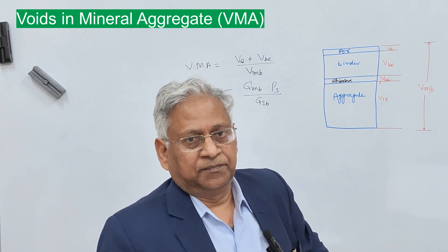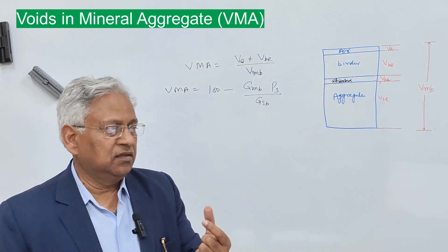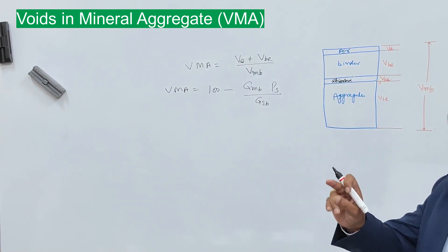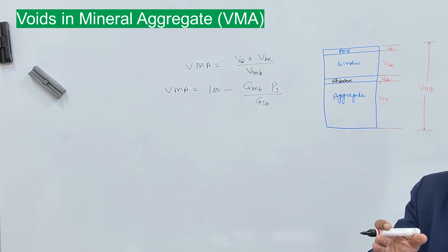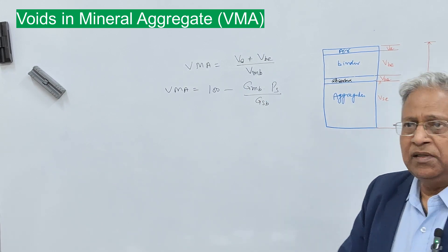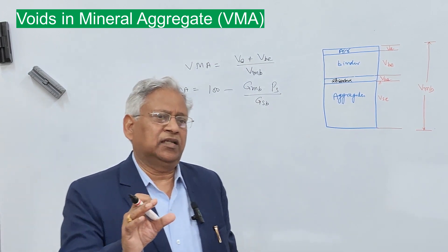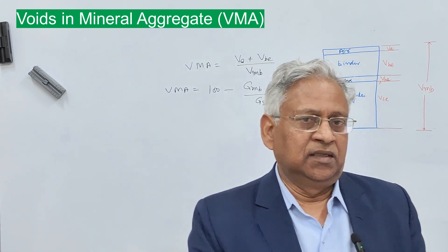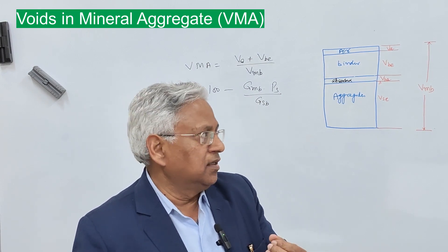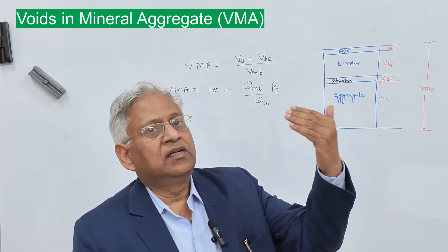The second minor factor is binder quantity. There is a small variation in VMA if there is a slight variation in binder content from OBC (optimum binder content). But if the binder content is very far from OBC — either on the left or right side — then VMA will increase in both cases. Similarly, the surface texture and shape of aggregate also have some effect, but are very difficult to quantify. For example, if you have cubical or highly angular particles, they will be difficult to compact, and if you cannot achieve the density, air voids will increase.